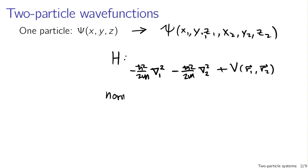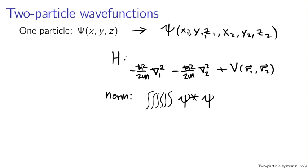Our wave functions still have to be normalized since we represent probability densities with them, but the normalization is a little different. The probability density is still psi-star times psi, but we have to integrate over many dimensions — six dimensions for two particles in three dimensions: dx1, dy1, dz1, dx2, dy2, dz2. So if you're trying to normalize a wave function for two particles in three dimensions in Cartesian coordinates, you've got a lot of integrating to do.